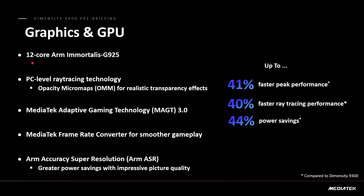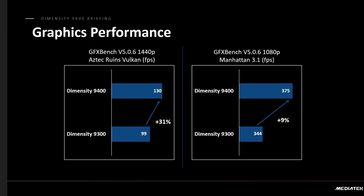On the GPU side, the 12-core Immortalis G925 features PC-level ray tracing along with super resolution and adaptive gaming technology. Overall: 41% faster peak performance, 40% faster ray tracing, and 44% better power savings — all compared to the Dimensity 9300. The fact they stuck with 12 cores while upgrading the GPU makes this a significant upgrade. In benchmarks from MediaTek: Aztec Ruins in Vulkan at 1440p goes from 99 to 130 fps, and Manhattan in full HD goes from 344 to 375 fps.